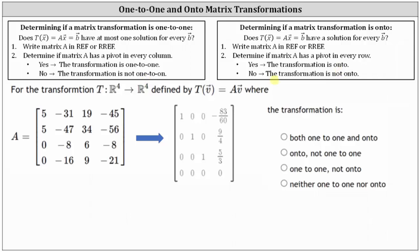Notice below, I've already written the matrix in reduced row echelon form, where we have a pivot in row one column one, row two column two, as well as row three column three. Notice in this case, we do not have a pivot in every column, and therefore the transformation is not one-to-one.